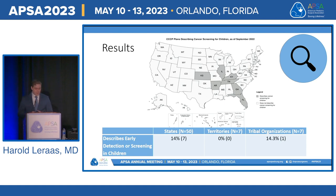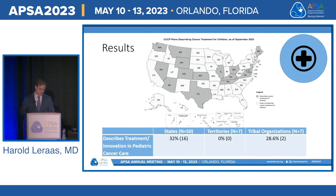Inclusion of cancer screening and detection programs in children was limited to only seven states, which included deliberate cancer screening programs and professional and public health education efforts to better identify pediatric malignancy. Deliberate discussion of pediatric cancer treatment and innovation in clinical care was included in 16 state cancer plans, covering provision of care, treatment protocols, and research to improve cancer outcomes.